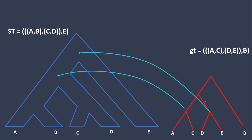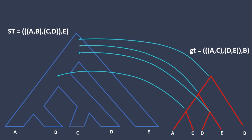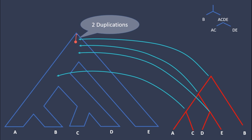Similarly, other internal nodes will also map into the root node of the species tree. Now we have completed our first task. From here we can see that the number of duplications is two, because three internal nodes have mapped into the same point — we count duplications as mapped points minus one. Now we draw a line representing the gene being discussed; before reaching the speciation point, this gene will get duplicated twice.